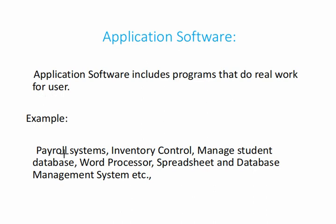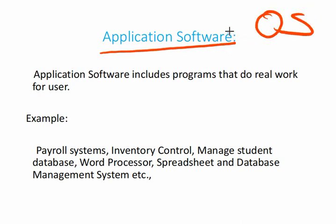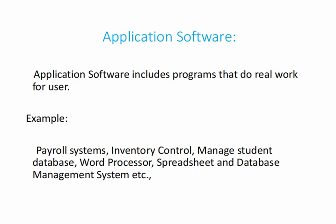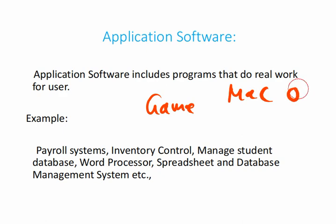Application software includes programs that do real work for the user. In the background, the operating system manages security, provides the interface, and allows application software to be installed. For example, when downloading a game, you will see options such as 'for Mac OS,' 'for Linux,' or 'for Windows' — showing that programs installed depend on the operating system.